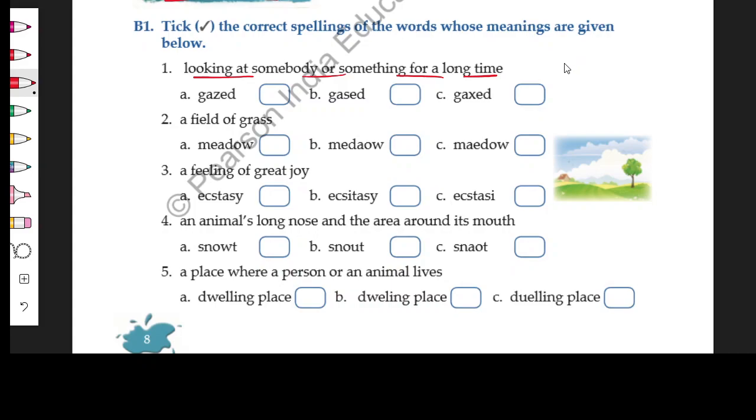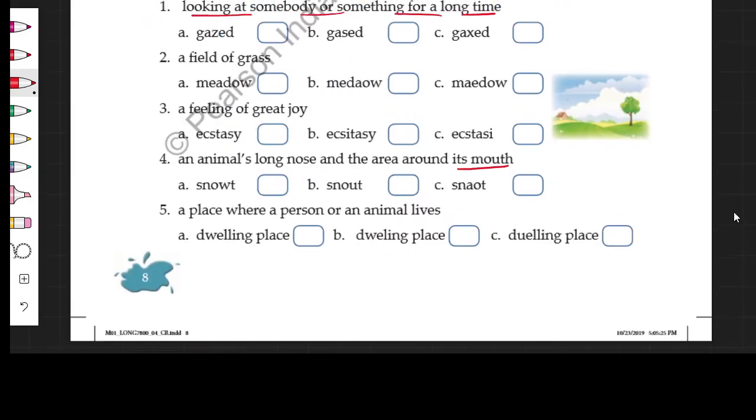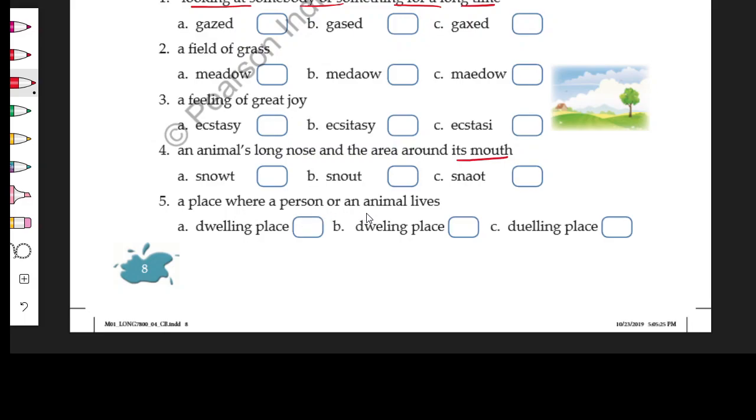A field of grass is called meadow. A feeling of great joy is called ecstasy. You can use it as 'he was ecstatic' or 'a great sense of ecstasy came over him.' An animal's long nose and the area around its mouth, this is called snout. In Hindi we call it 'thuthna.'